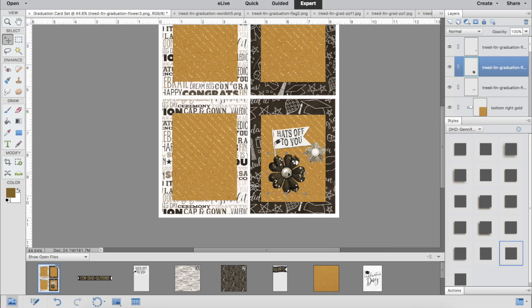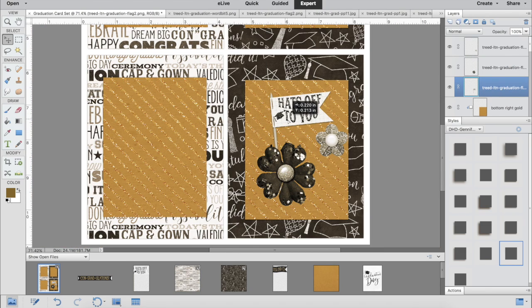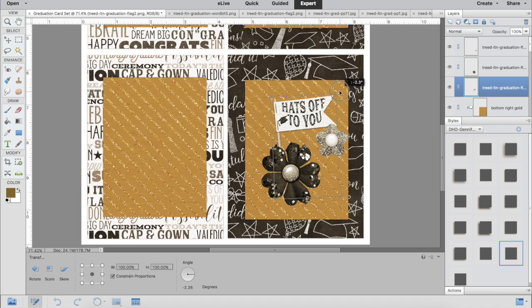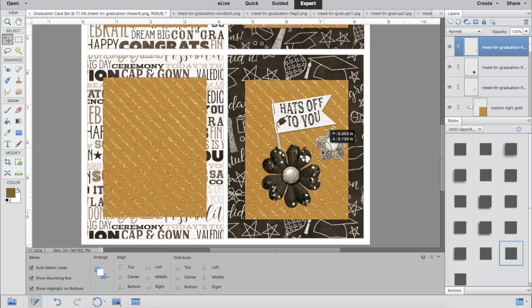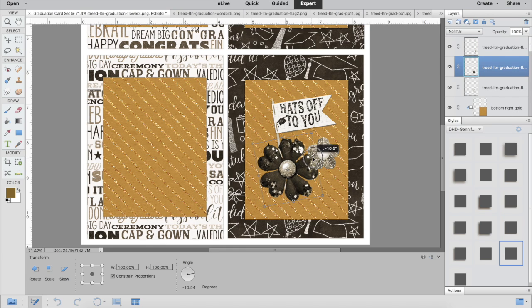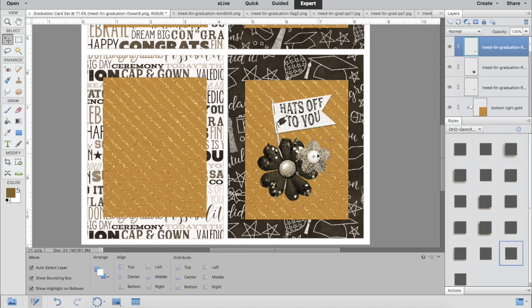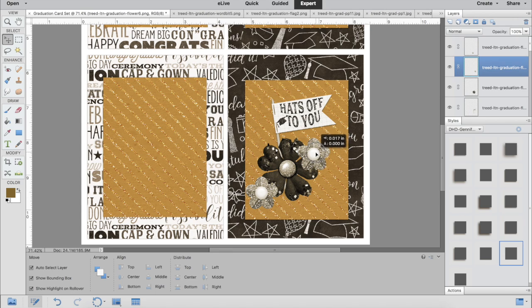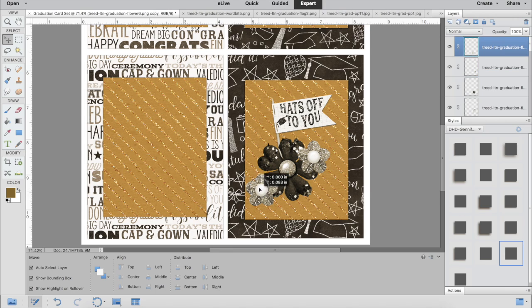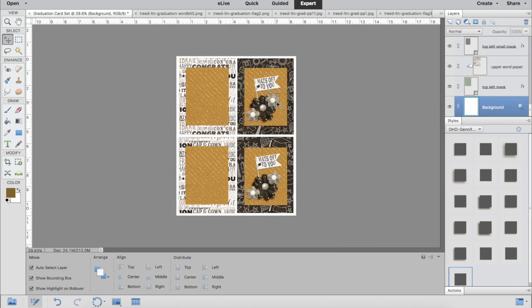These I've also recolored to match the brown and gold theme. I've brought in this large brown flower and the little tag or banner, and I'm going to put one of those silver flowers on each one and move those into position. I'm going to repeat that process with the upper card so they look identical.